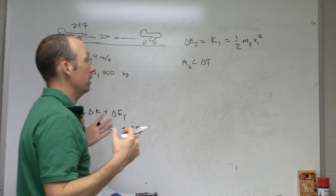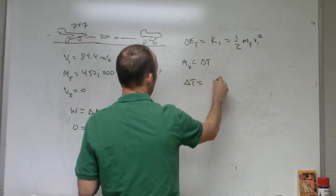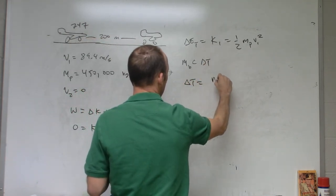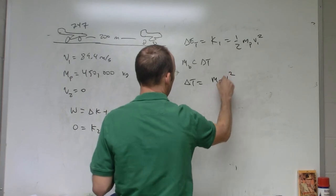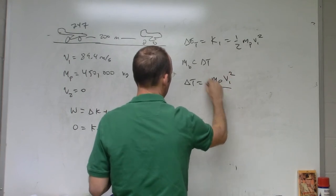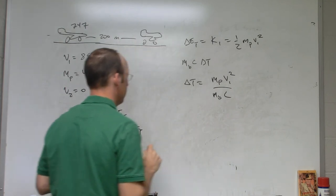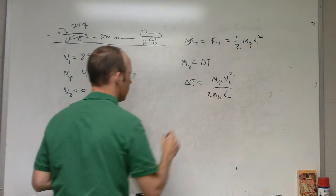Now, I really want to find the change in temperature. So delta T equals V1 squared over mass of the brakes, the specific heat. And there's a 2.